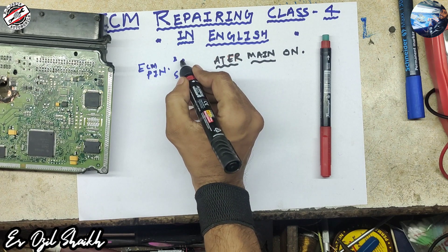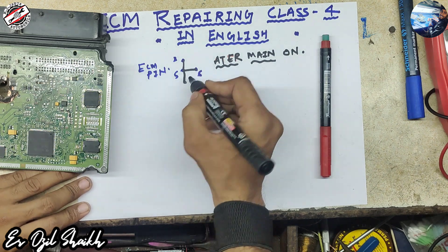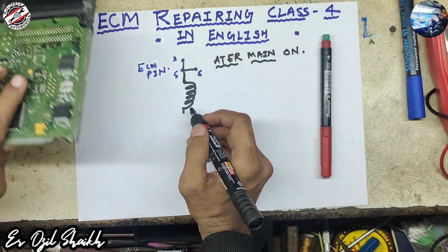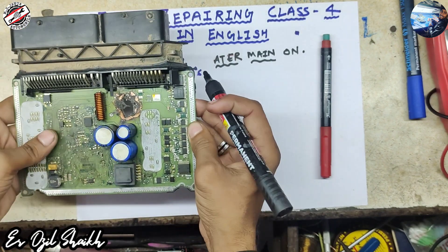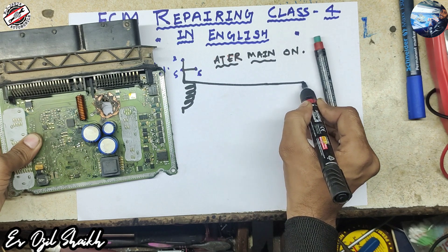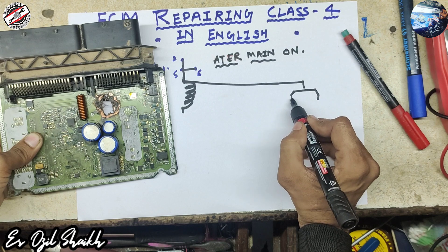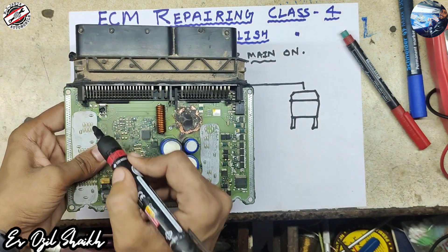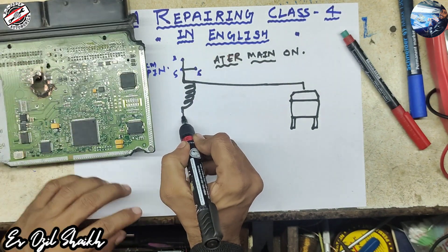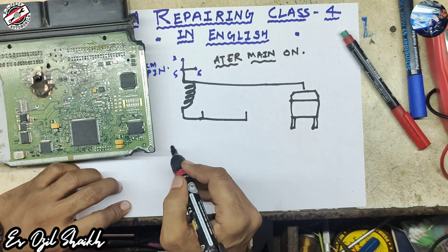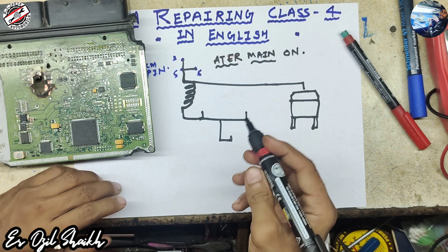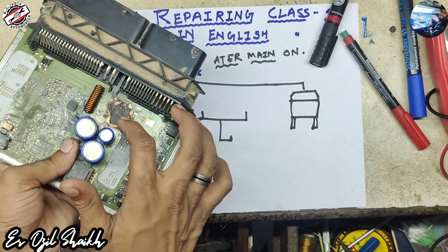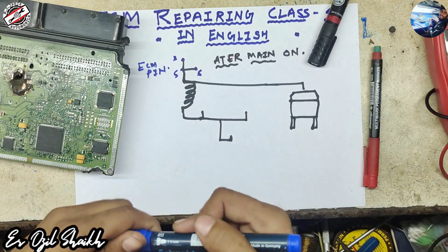After main relay on, 12 volts comes here and here, and goes to the copper coil wire. As you can see on the board here, it also goes to this one MOSFET. Here you can see the location of this MOSFET on the board.